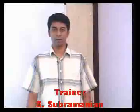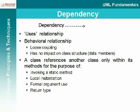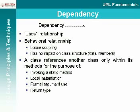We can conclude on composite aggregation — we know we are talking about the whole-part relationship where the whole exclusively holds the part. Now coming to the last relationship: dependency. Dependency is the 'uses' relationship, also called a behavioral relationship, meaning you do not have any impact on the structures or data members of your class. I would term dependency as one of four things a class references another class only within its methods.